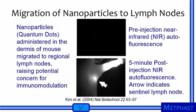A study by Kim et al. examined what happens when nanoparticles penetrate through the epidermis into the dermis. Quantum dot nanoparticles were administered directly into the dermis of mice and their migration was studied by near-infrared autofluorescence. Just 5 minutes after injection, autofluorescence was detected in the region of the lymph nodes, indicating that nanoparticles migrated to regional lymph nodes, raising potential concern for immunomodulation.